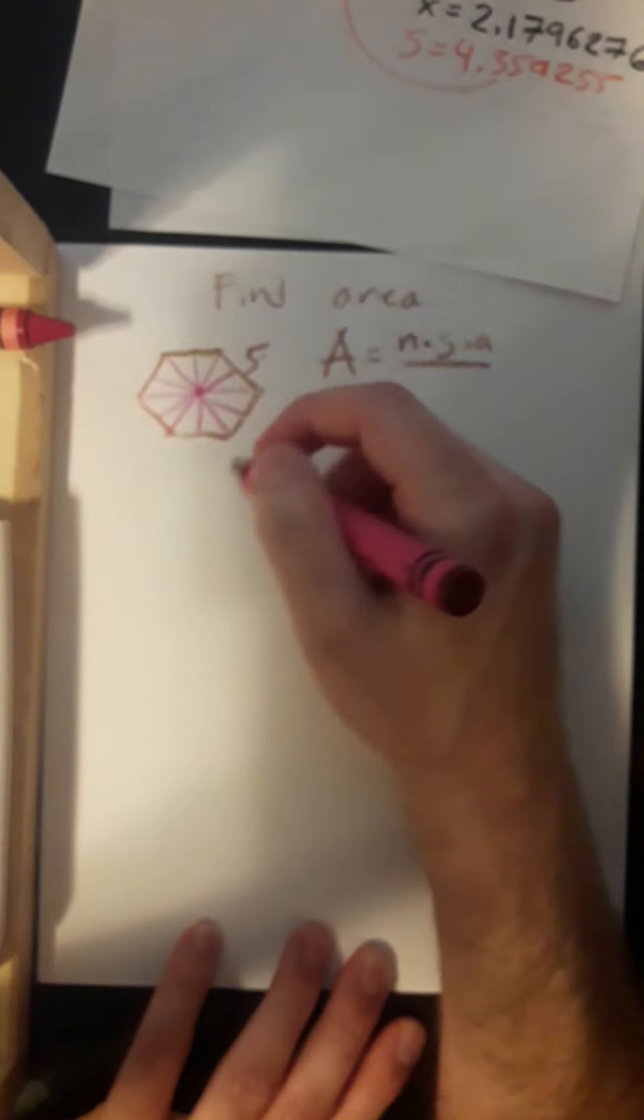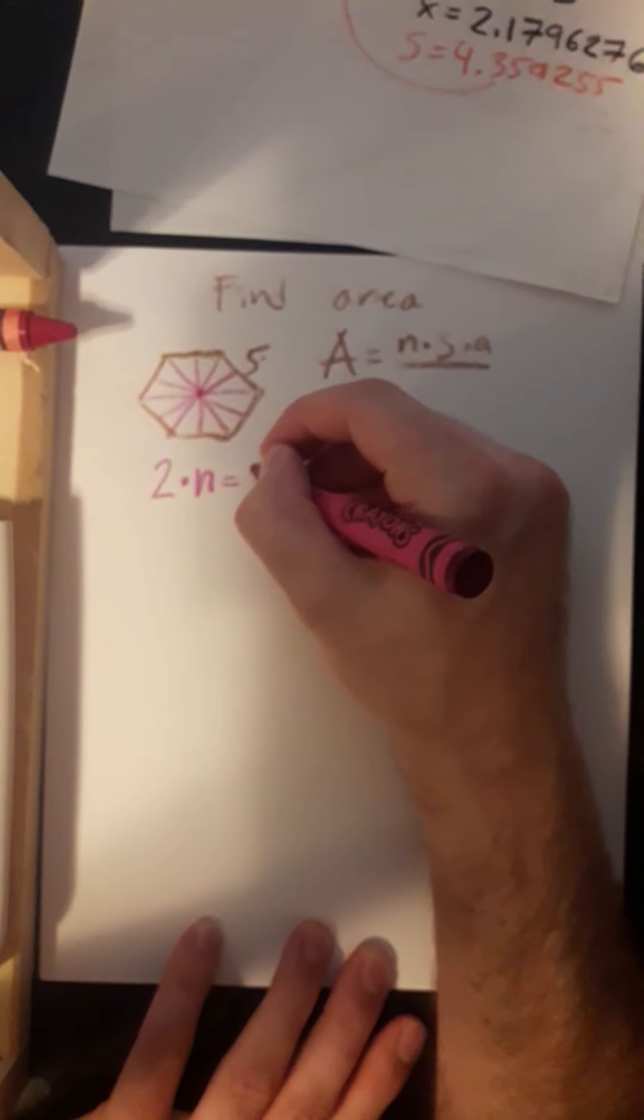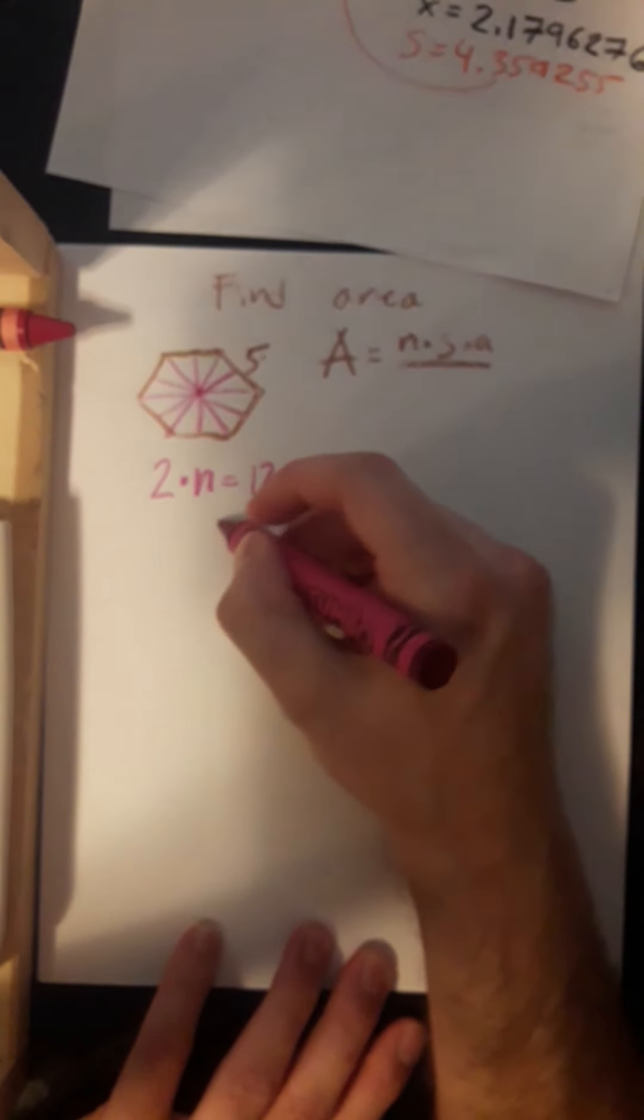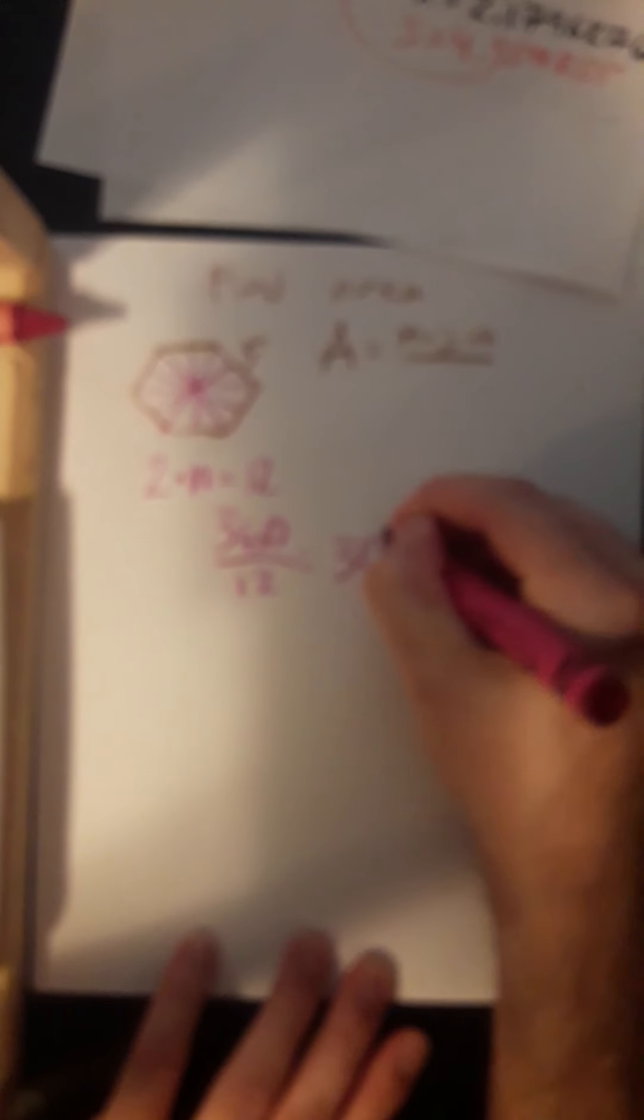Now, the number of triangles it splits up into is always 2 times the number of sides. In this case, since we have 6 sides, that's going to be 12. So we're going to take 360, divide it by 12, and we're going to get 30 degrees.